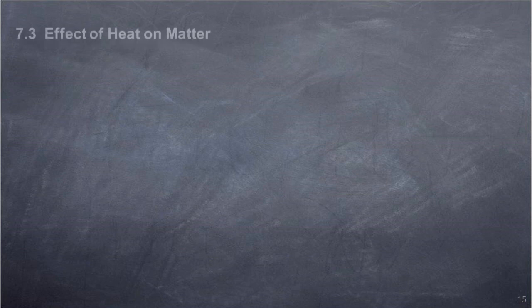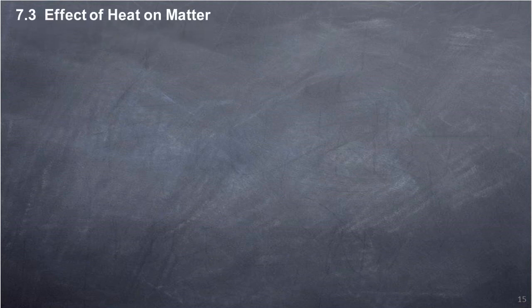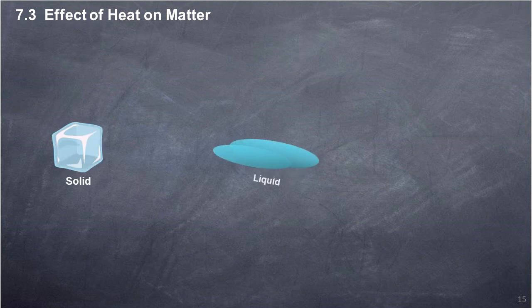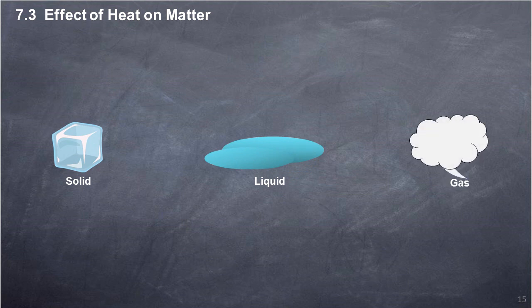7.3 Effects of heat on matter. Matter typically exists in one of three states: solid, liquid, or gas. On an energy level, gas state is at a high energy level, while solid state is at a low energy level.